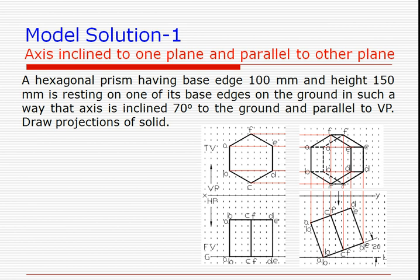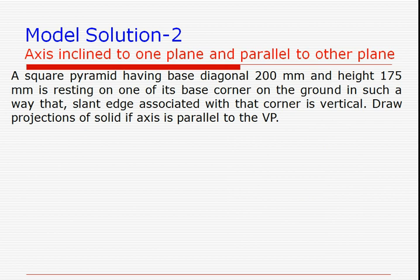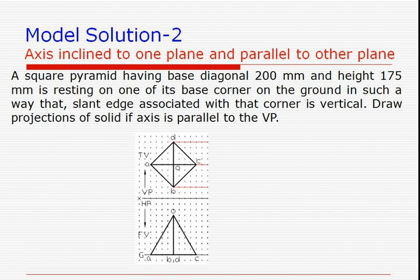The next question involves a square pyramid also inclined to the ground. The exact inclination is not given directly; instead, it is stated that the slant edge associated with the corner on which it is resting is vertical. Finally it has to lie with one base corner on the ground, so we keep that on the extreme side in the initial position.